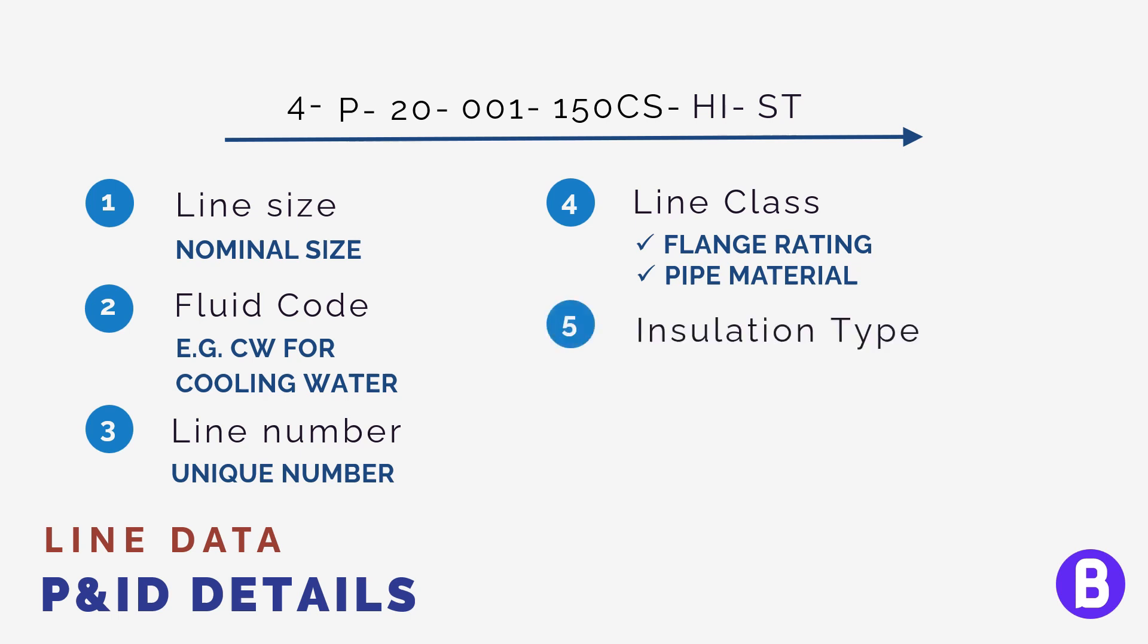Insulation type. The insulation type in case the pipe is insulated can be for example a personal protection if we don't want the operator to touch the hot pipe by mistake. Or it can be heat conservation if we want to reduce the heat transfer with the ambient atmosphere.